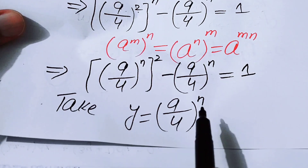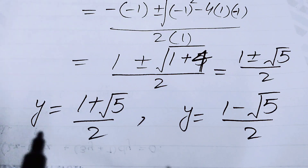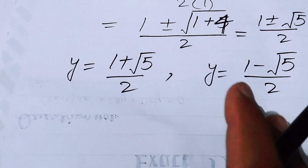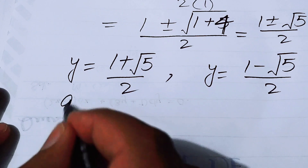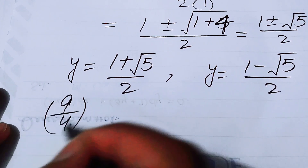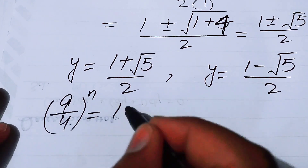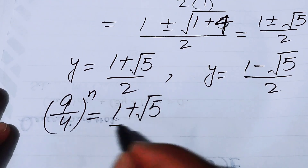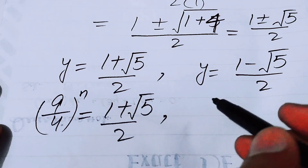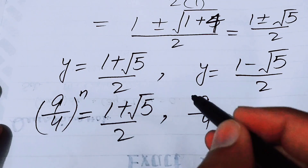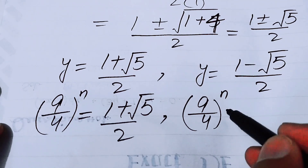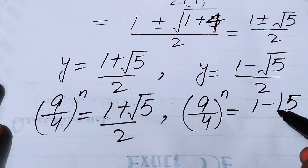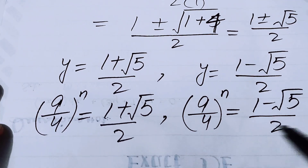Back-substituting the value of y, we get (9/4)^n equals (1 + √5)/2 for the first case, and (9/4)^n equals (1 − √5)/2 for the second case.